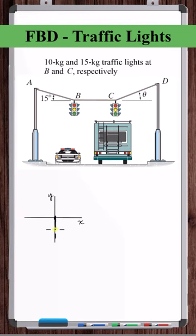So at point B, the weight of the traffic light acts down, 10 times 9.81 is 98.1 newtons.